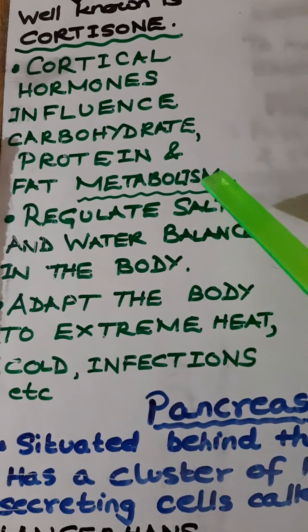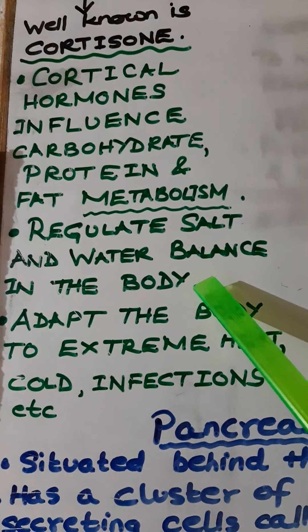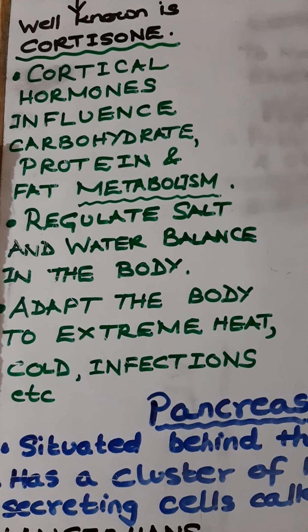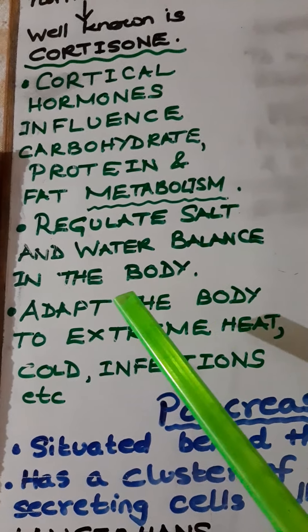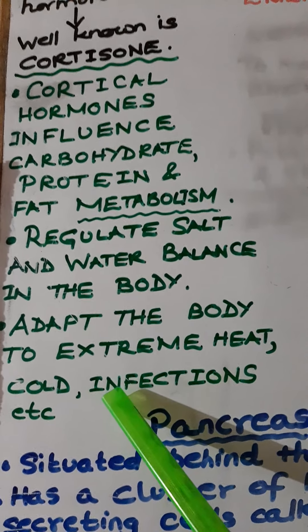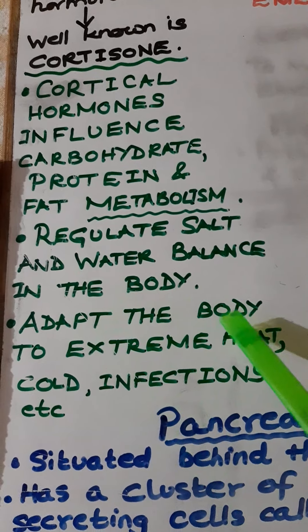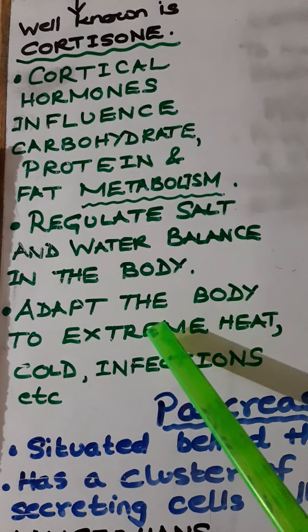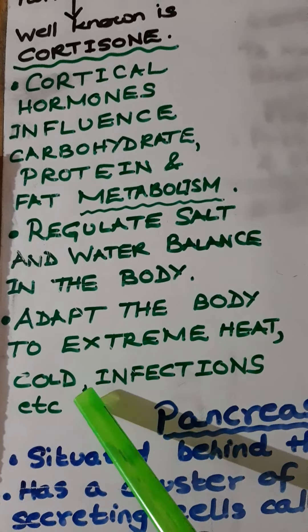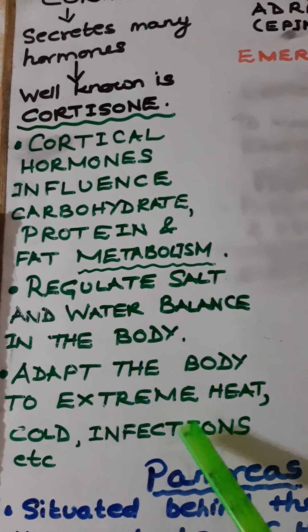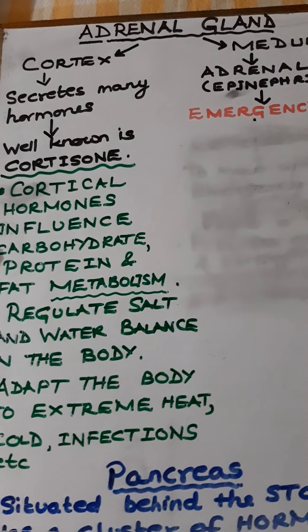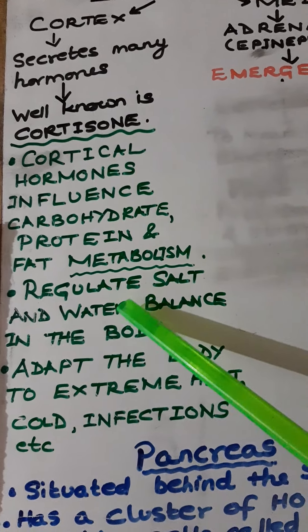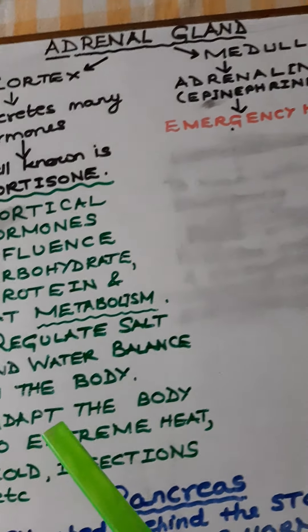Secondly, cortical hormones regulate the salt-water balance in the body. Thirdly, they adapt the body to extreme heat, cold, and infections. So these are the three roles of cortisone or cortical hormones.